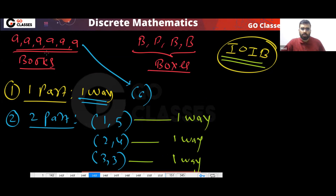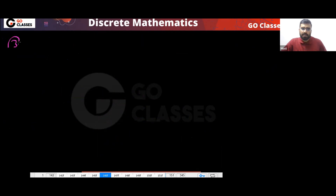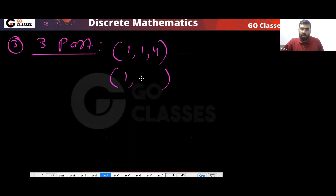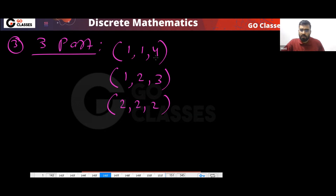It does not matter which apple you put separate — all apples are the same. Just write the cases; every case will have only one way. For three parts: you can do 1,1,4 or 1,2,3 or 2,2,2. Go step by step. So there are three three-part partitions.